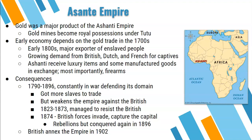Osei Tutu centralized the bureaucracy, made Kumasi the capital, created a constitution, and reorganized and centralized the military. Gold was the major product of the empire. Under Tutu, all gold mines became a royal possession — you could work in them, but profit went to the royal family and was distributed through the government. Their early economy in the 1700s depended on the gold trade. However, in the early 1800s, they became a major exporter of enslaved people. There was growing demand from the British, the Dutch (Netherlands), and the French for captives — people could mine for more gold than gold itself could provide.